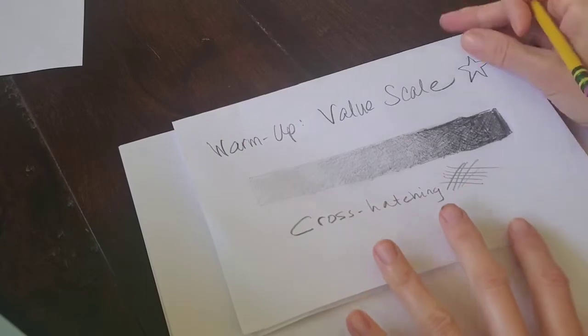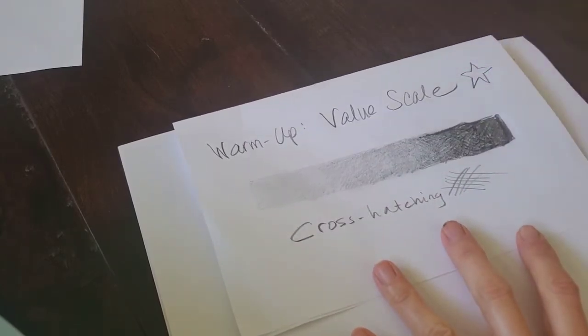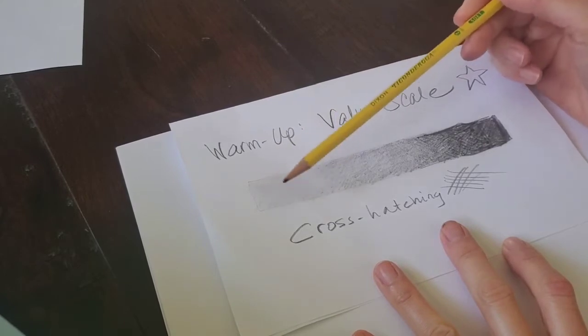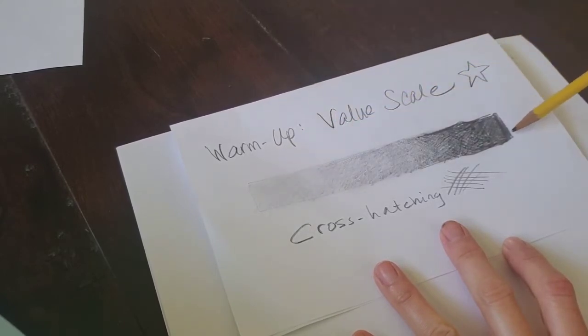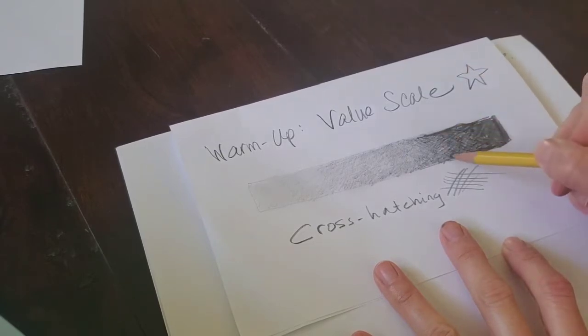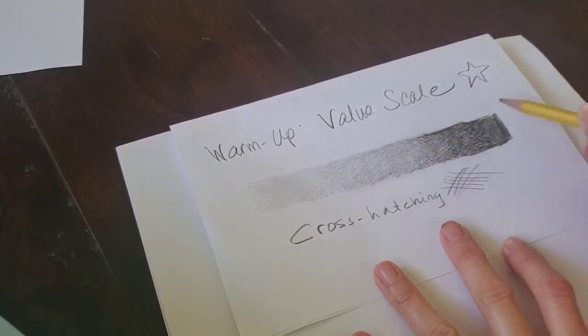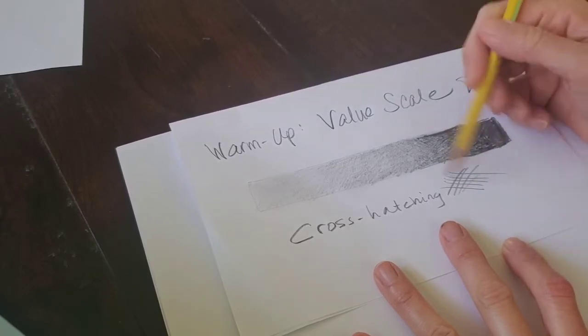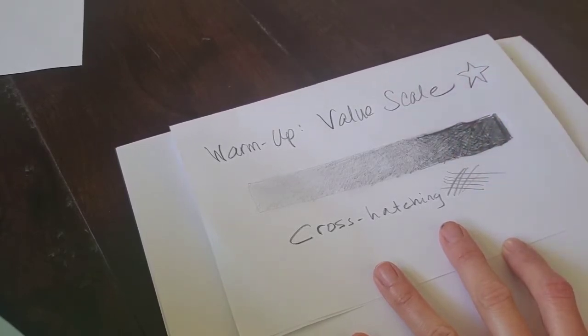The first thing you should do is practice making a value scale. When you do the value scale, you want to practice being as light as possible with your pencil all the way down as dark as possible. And you want it to blend. You don't want to see a sharp edge where suddenly it's light and suddenly it's dark. One of the tricks to do that is by making your pencil go opposite directions from each other. And we call that cross-hatching.